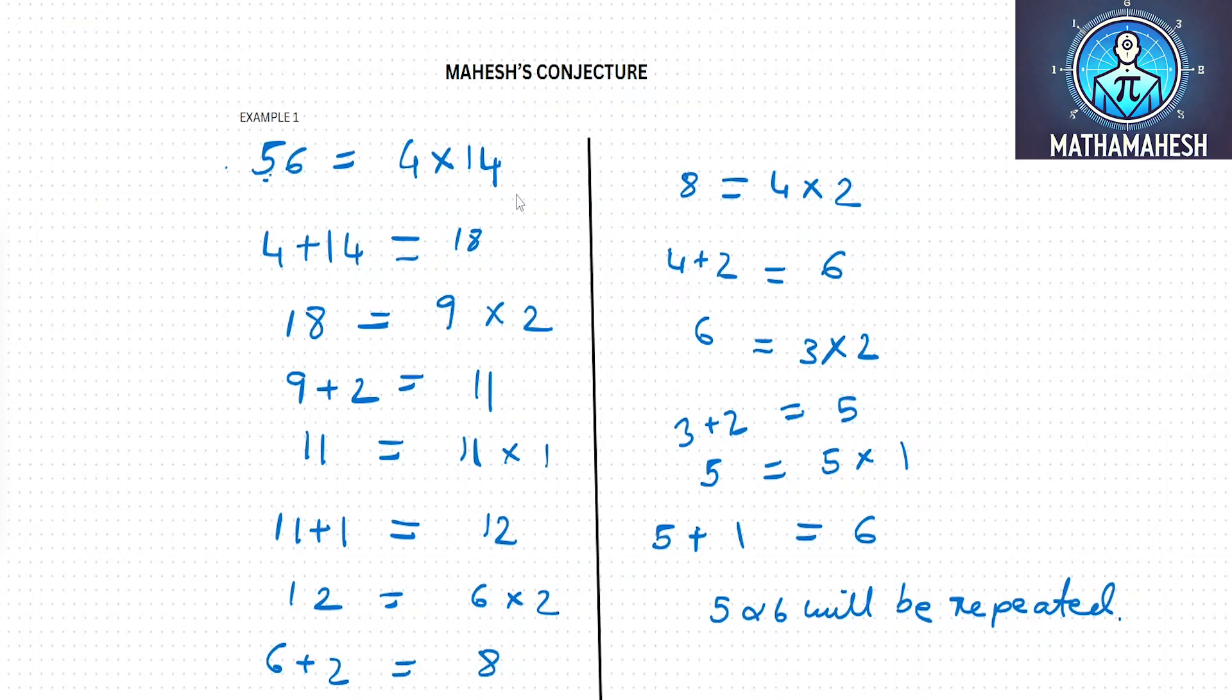11 being a prime number, 11 can be represented as 11 into 1. On adding 11 and 1, we end up with 12. Now 12 can be factored as 6 into 2. On adding 6 and 2, we get the number 8.